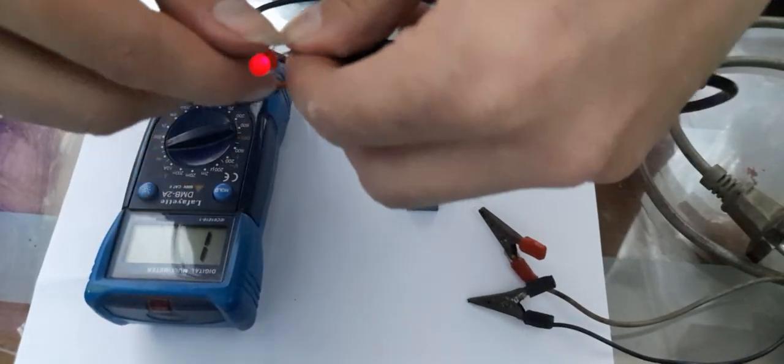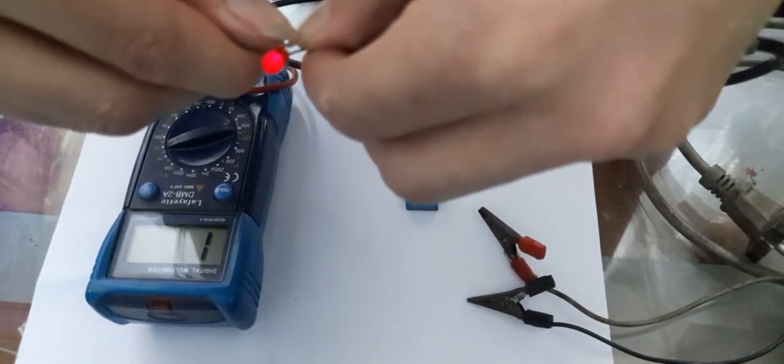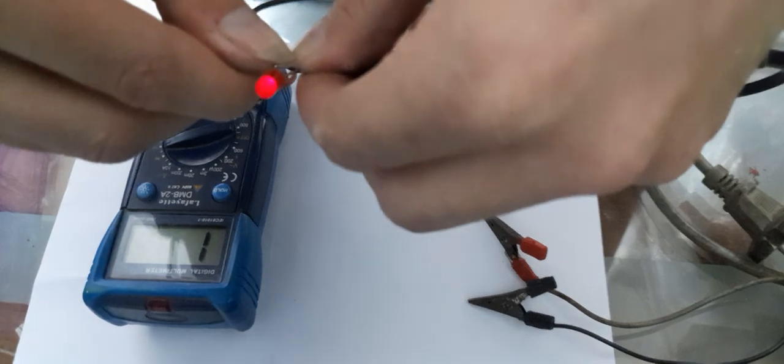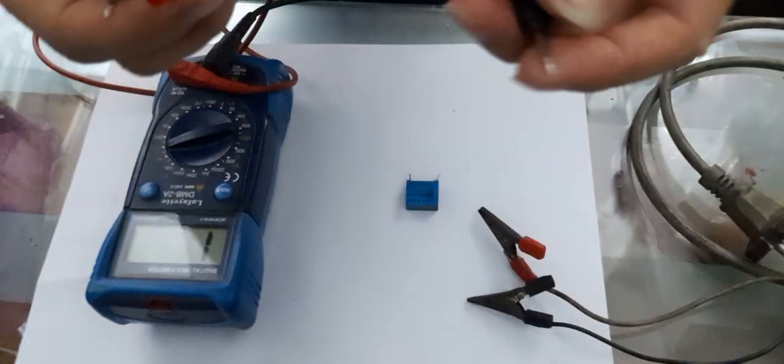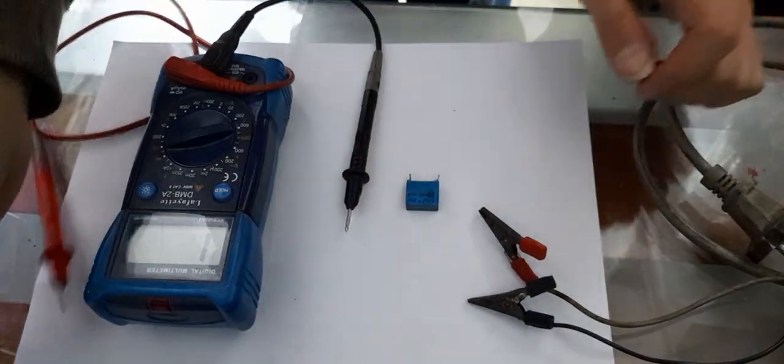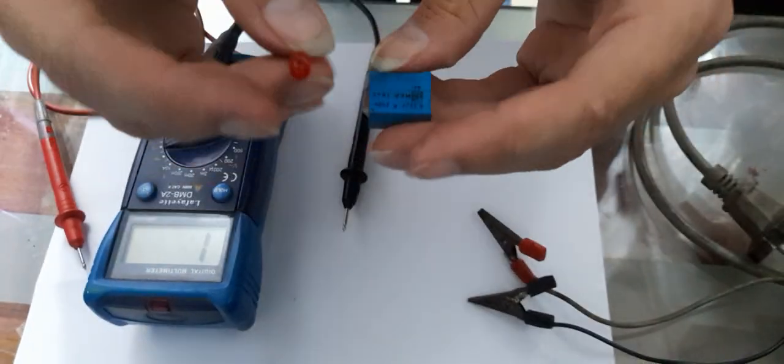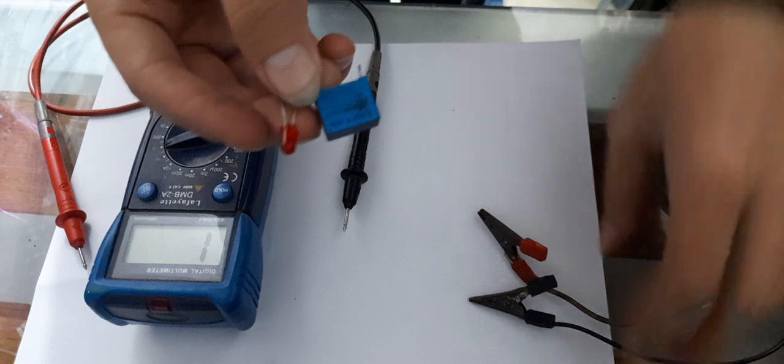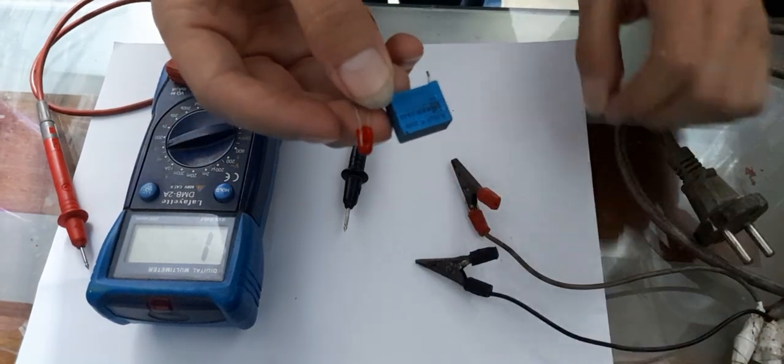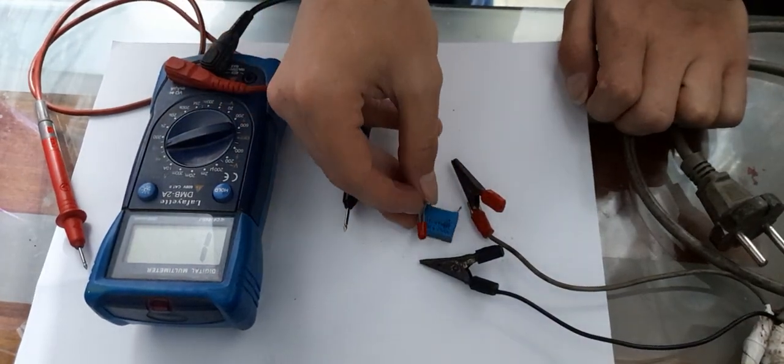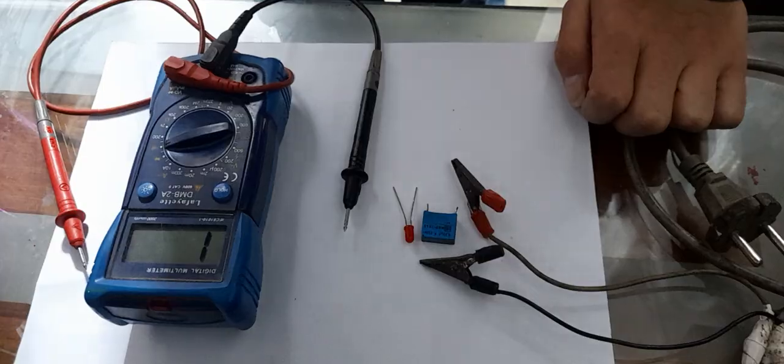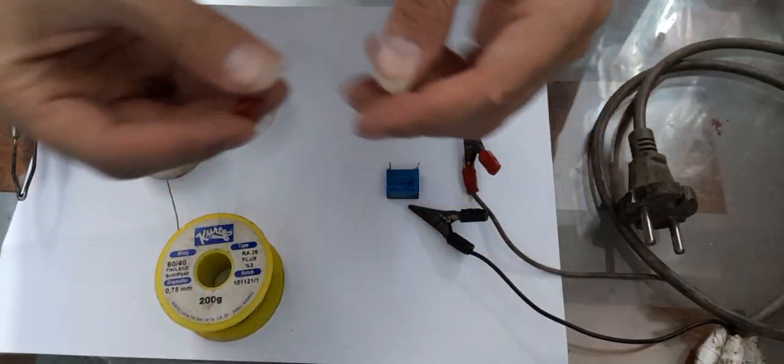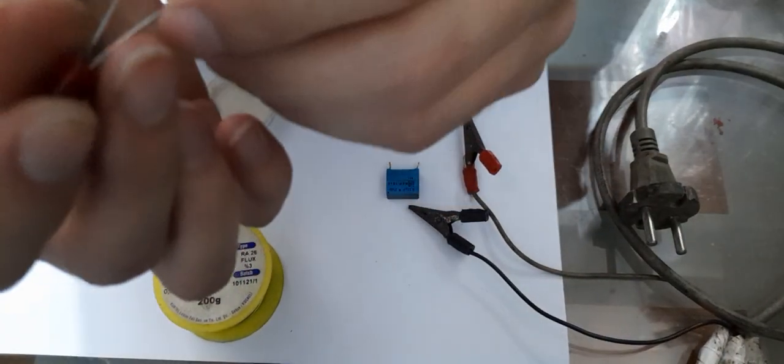But in this direction, it will show continuity. So I will solder this LED diode with this capacitor in series and connect it to the mains power line to see what will happen. As you can see, you can identify